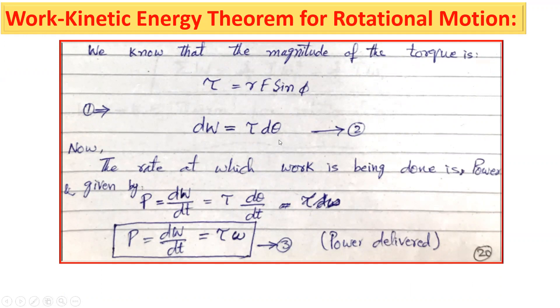Now, the rate at which work is being done is called power, and which is given by P equals dW over dt, or this one we can write as tau into d theta over dt. The power is dW over dt.